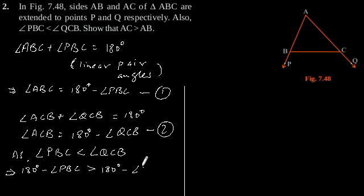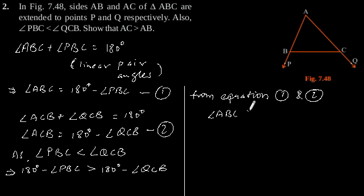From equations 1 and 2, we can conclude that angle ABC is greater than angle ACB. Therefore, AC is greater than AB, since the side opposite to the larger angle is larger.